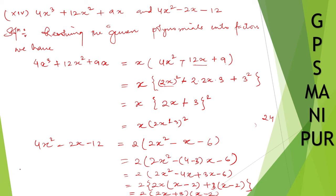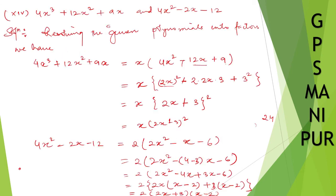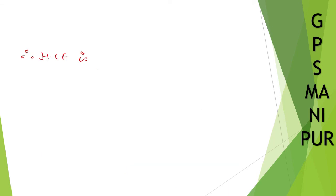So let me write down here. Therefore, HCF is... so what is the common one? So 2x + 3 and 2x + 3, I can take common, that is 2x + 3. This is the common one, HCF.